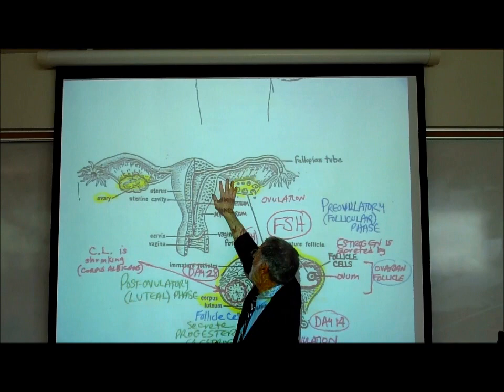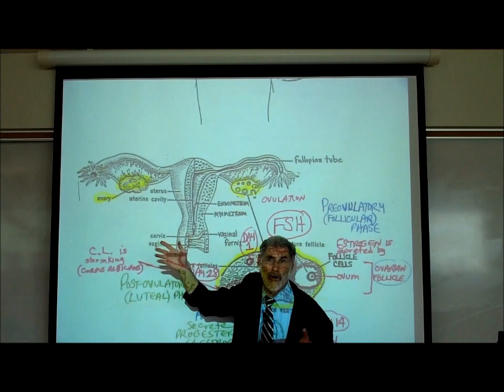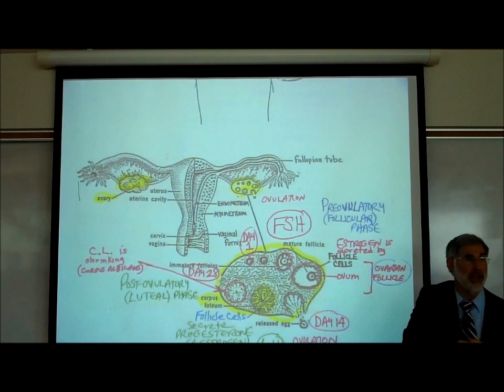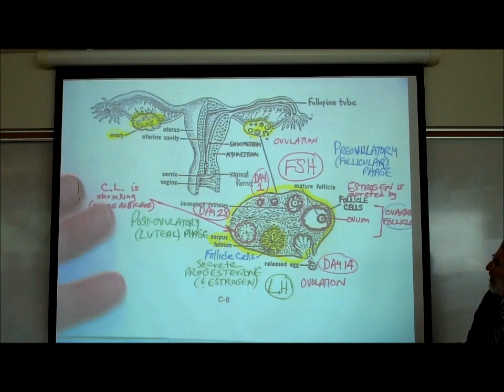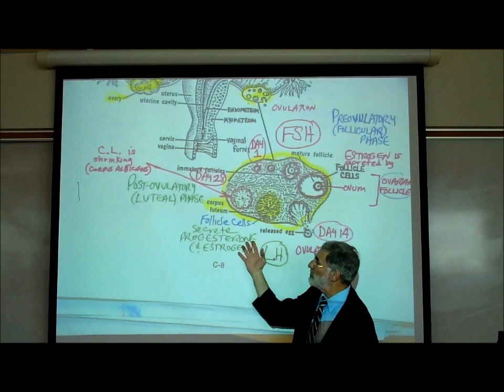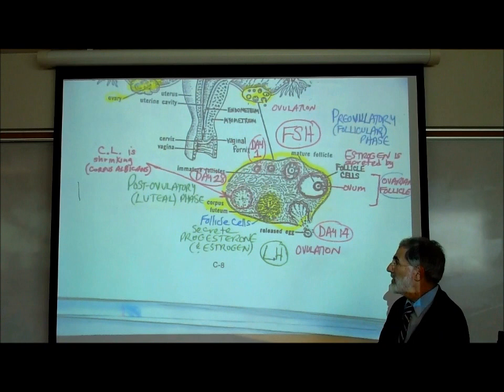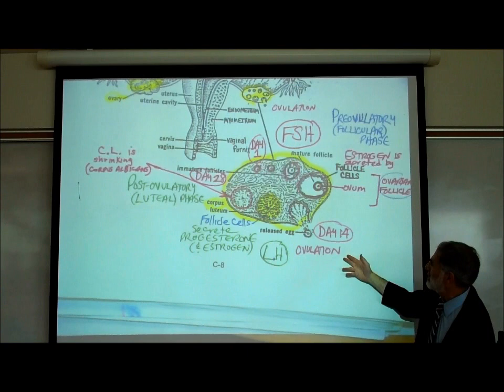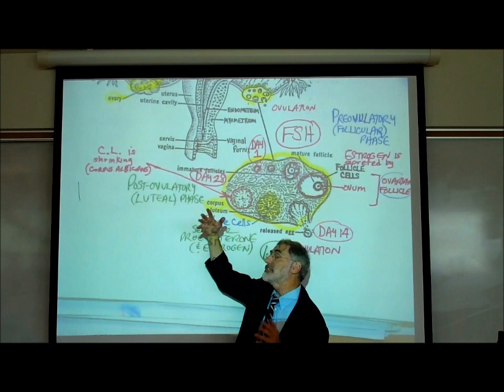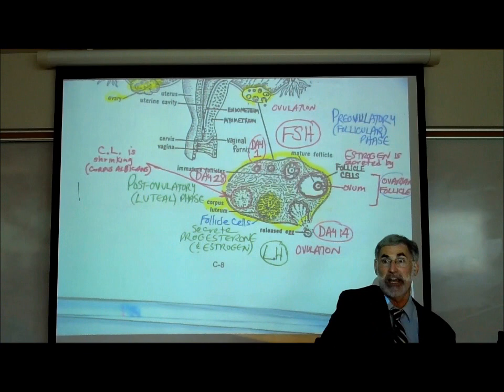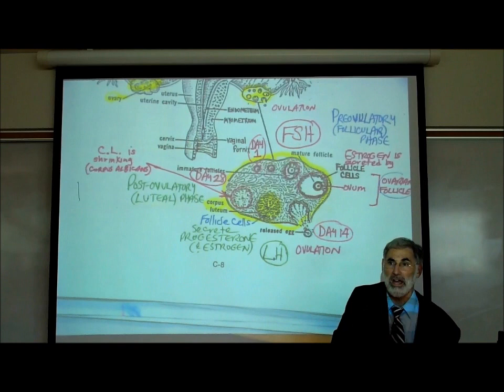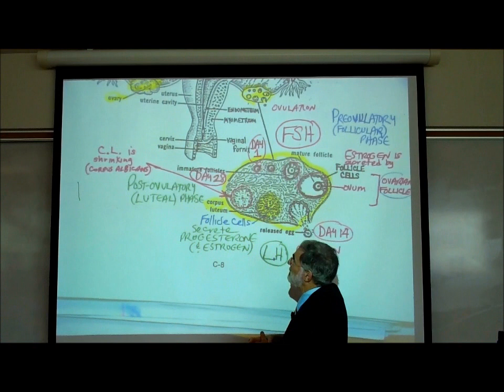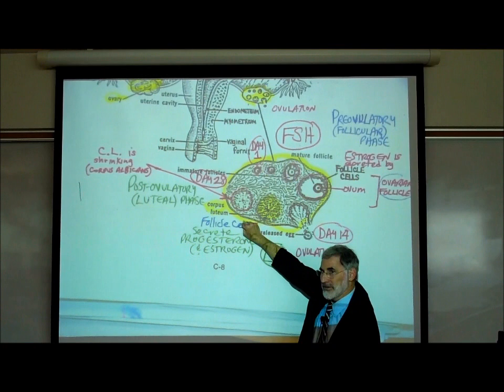LH is released for about two weeks, so progesterone is secreted for about two weeks, beginning around day 14 and continuing until about day 28. When the LH stops being secreted from the pituitary gland, the follicle cells of the corpus luteum start to shrink — they call this the corpus albicans. 'Corpus' means body, 'albicans' means white, like albino. As the follicle cells atrophy and shrivel up, it turns kind of white and stops secreting progesterone.